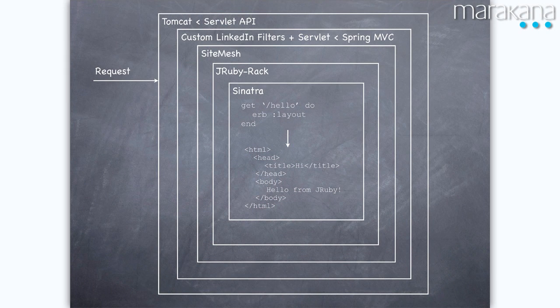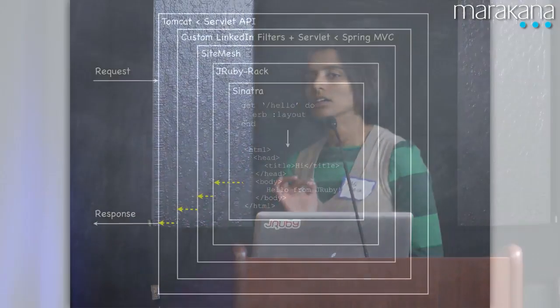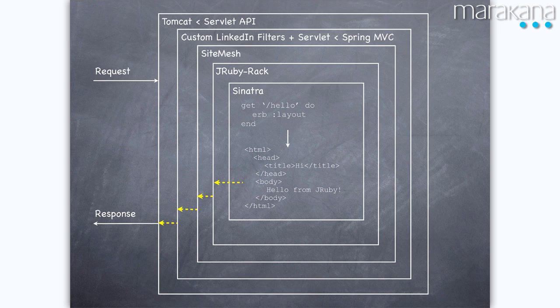Here's what Sinatra looks like. A very simple Sinatra app would be: get '/hello' — 'hello' is the route, the actual request path — and you can use ERB just like in Rails, passing in a template, in this case called 'layout'. What that returns is basically some HTML. Eventually that makes its way out of our stack, goes through SiteMesh, which takes the HTML response, breaks it into an object, applies the Chrome to it, and then you have a response.